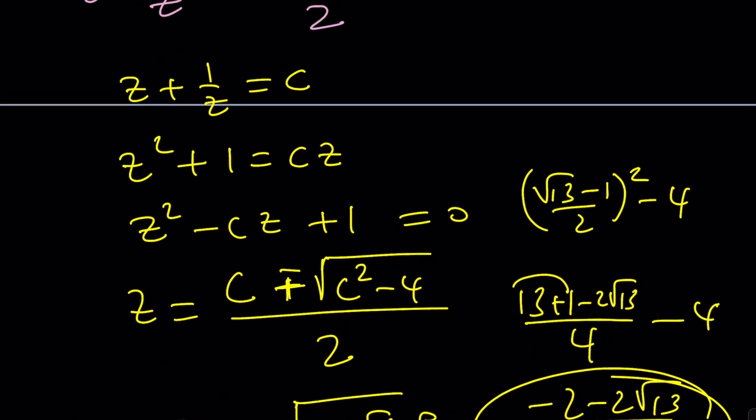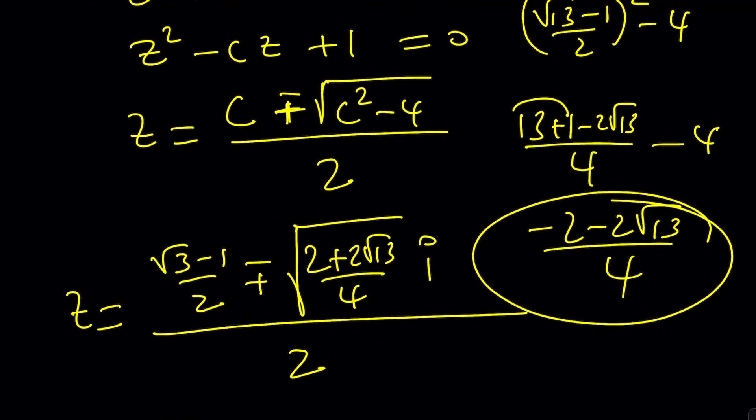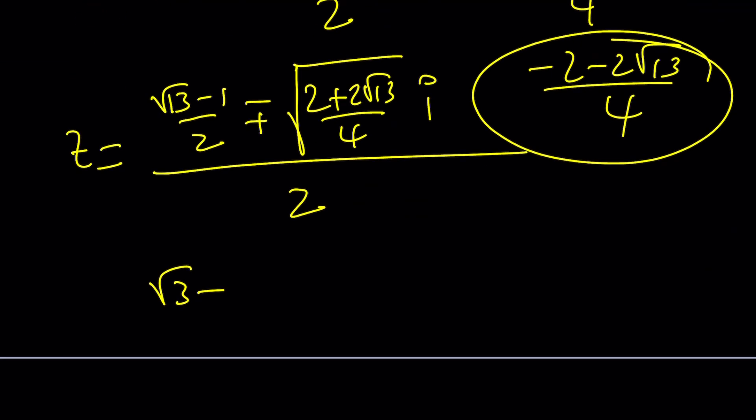Was it root 13 or root 3? I think it's root 13. Yeah. Not 3. Root 13 minus 1 plus minus the square root of 2 plus 2 root 13 i all over 4, because there's going to be a division by 2 twice, and the other solutions should be similar.